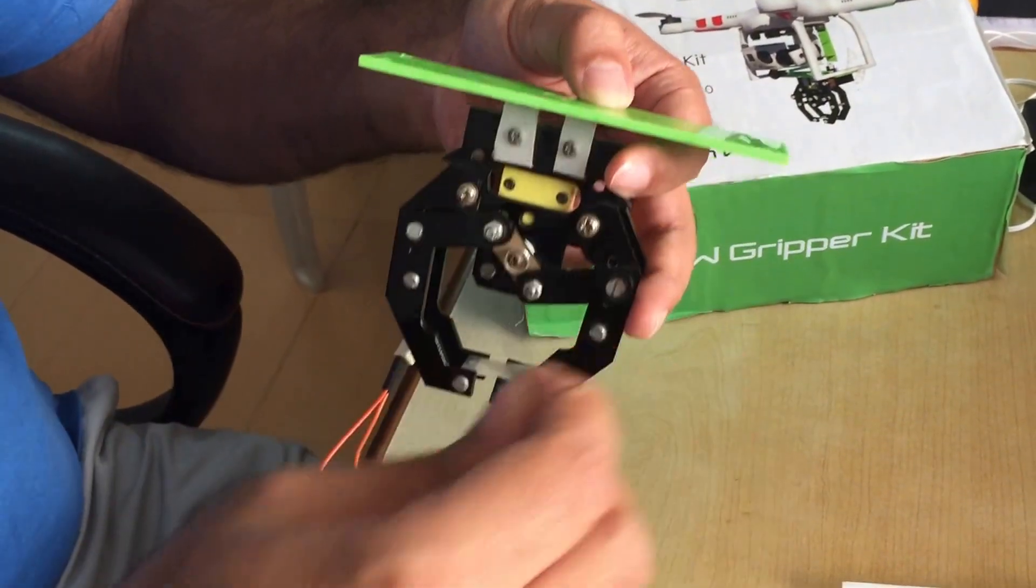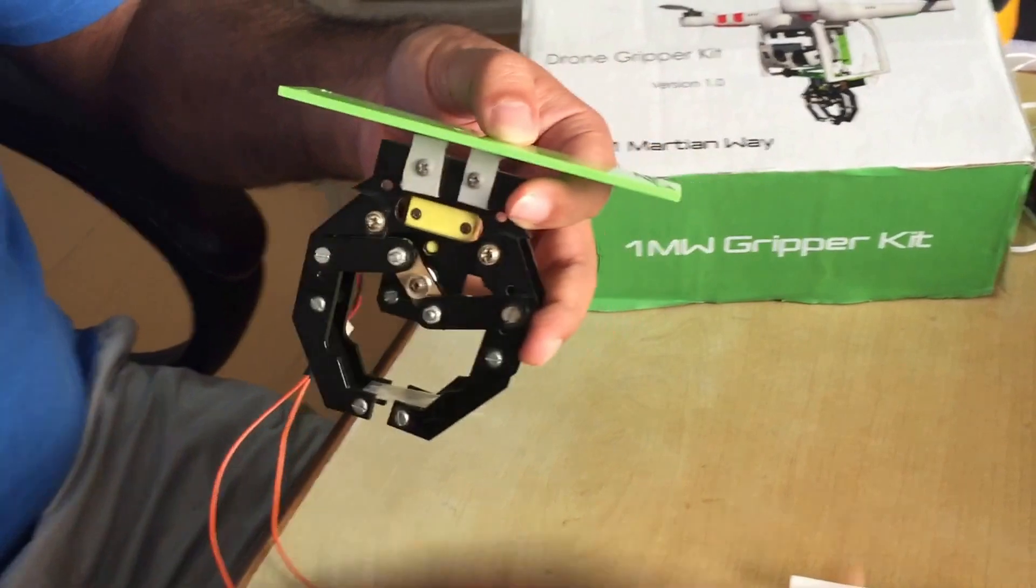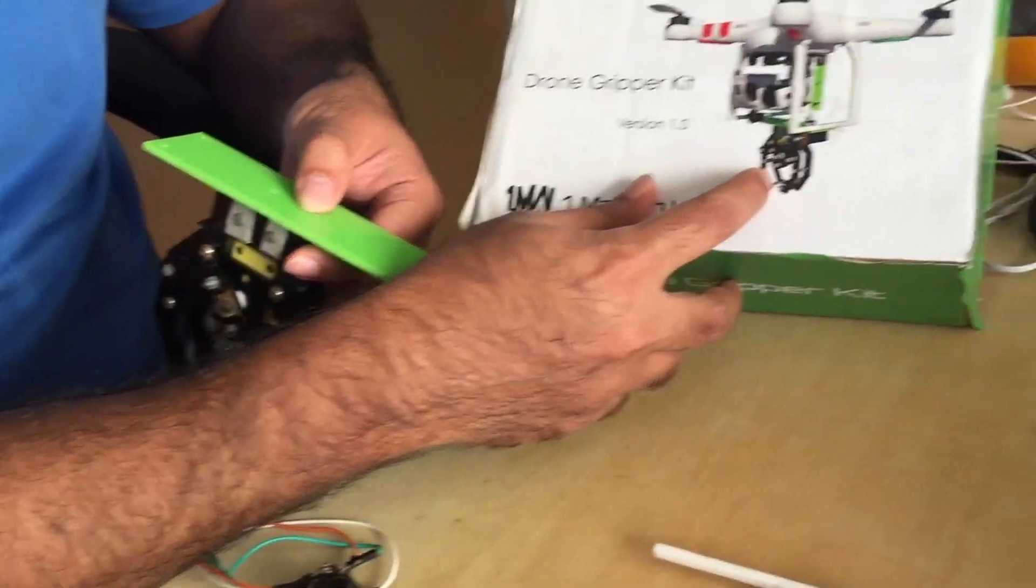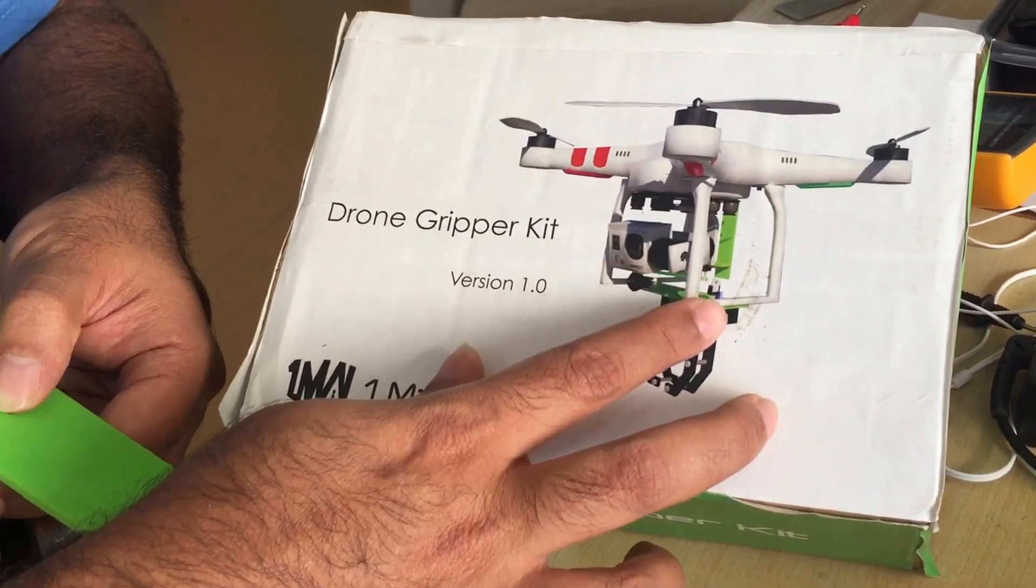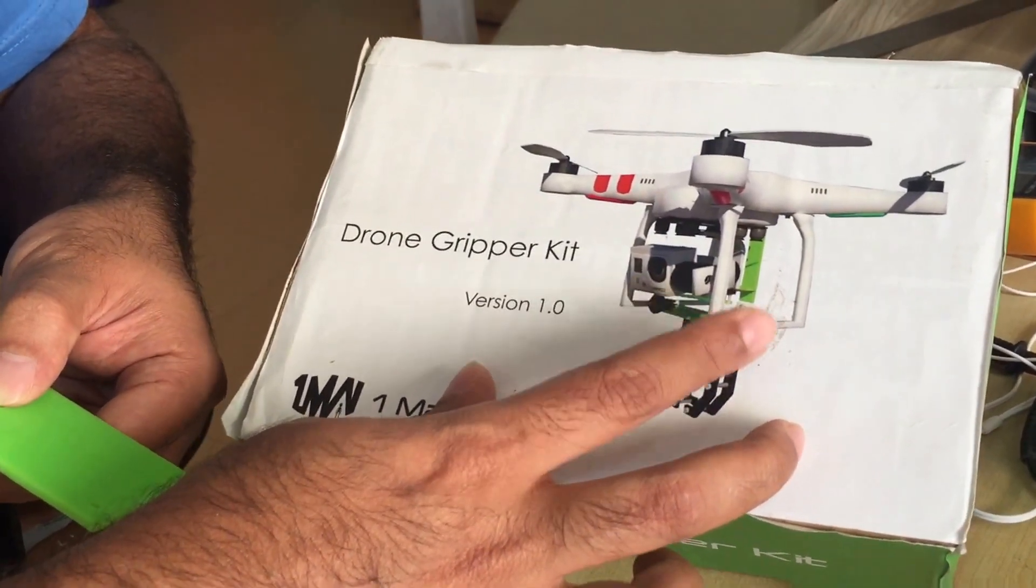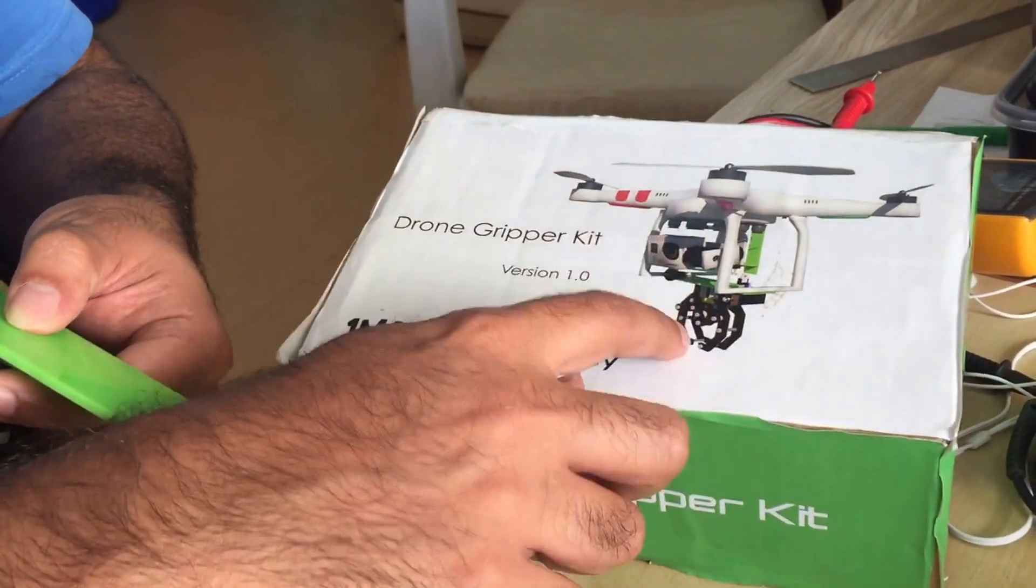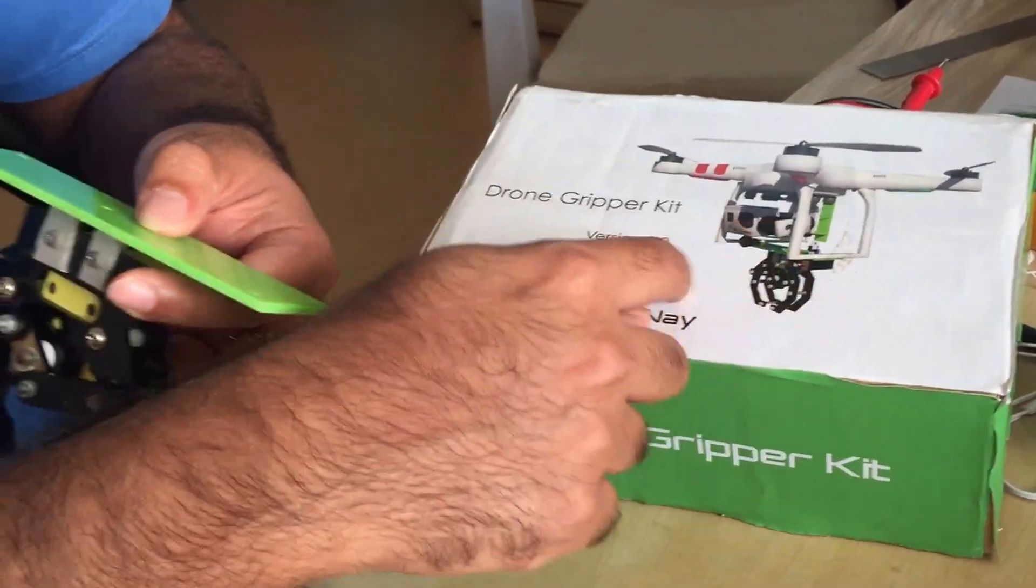Just like in the picture it is shown, you mount it like this. The strip will be like that so your gripper will be in this position, front facing position.